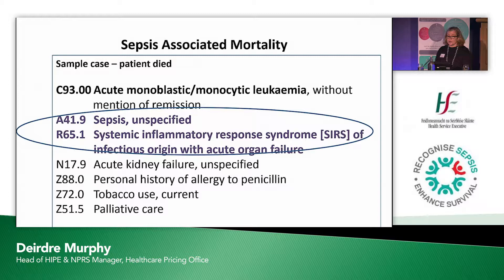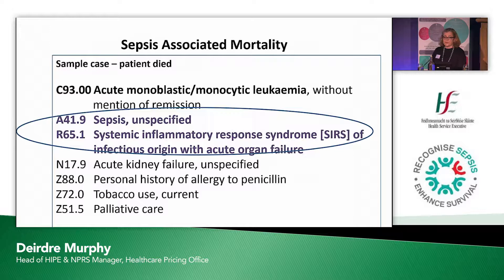This is just an example to show you what a string of codes — what a patient looks like from the Hype side, from a coding side. So this patient here has leukaemia as their principal diagnosis. You can see that they have sepsis, they have SIRS with acute organ failure — our R651 code — and you can also see that they have acute kidney failure, a history of allergy to penicillin, a mention of tobacco use, and palliative care. That's how we translate that into those codes that Mitch was talking about.